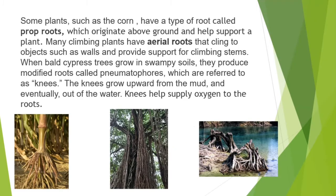Some plants, such as corn, have a type of root called prop roots, which originate above ground and help support the plant. Many climbing plants have aerial roots that cling to objects such as walls and provide support for climbing.